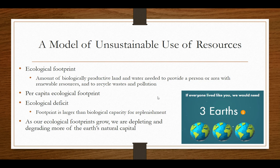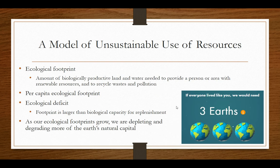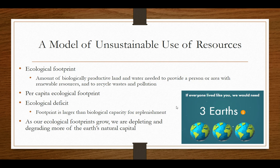The IPAT equation helps us determine the ecological footprint of a country or person. Per capita ecological footprint means per person ecological footprint. More developed countries have a higher ecological footprint both by country and per capita. Most countries are in ecological deficit — their footprint is larger than their biological capacity for replenishment. For example, a U.S. citizen requires the equivalent of five Earths, while someone in Brazil requires 1.8 Earths — both above their biological capacity.